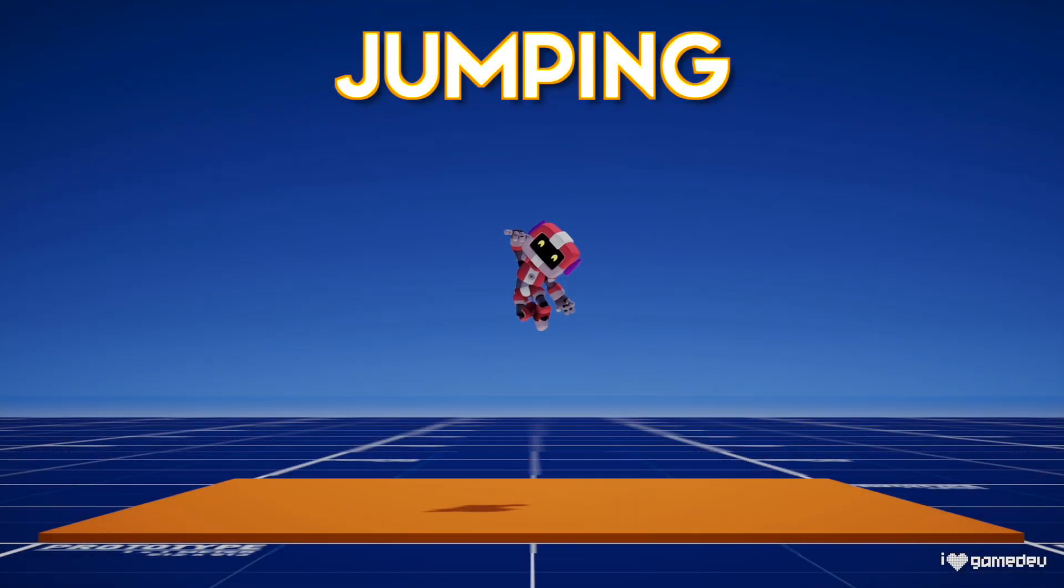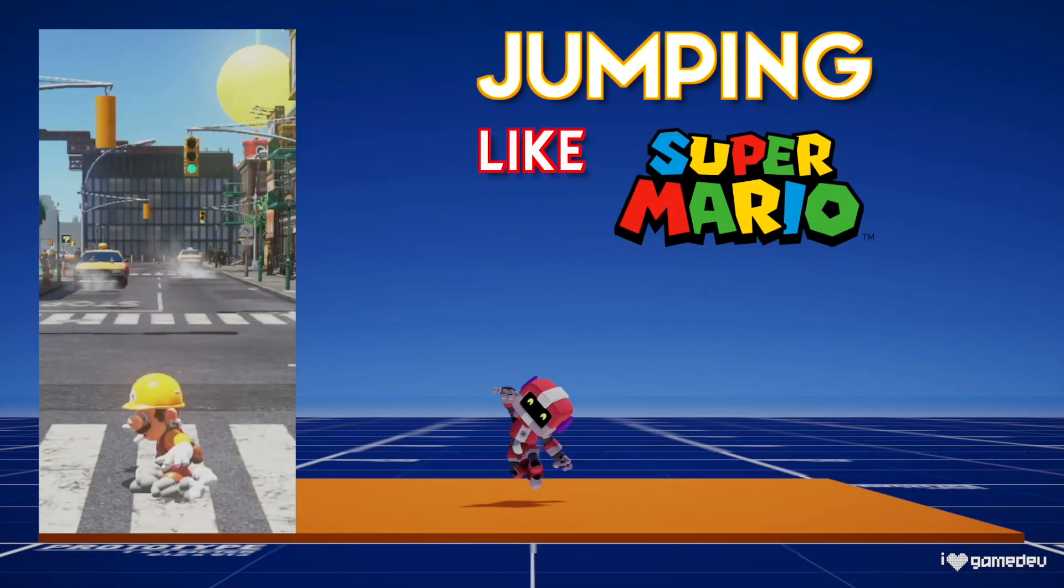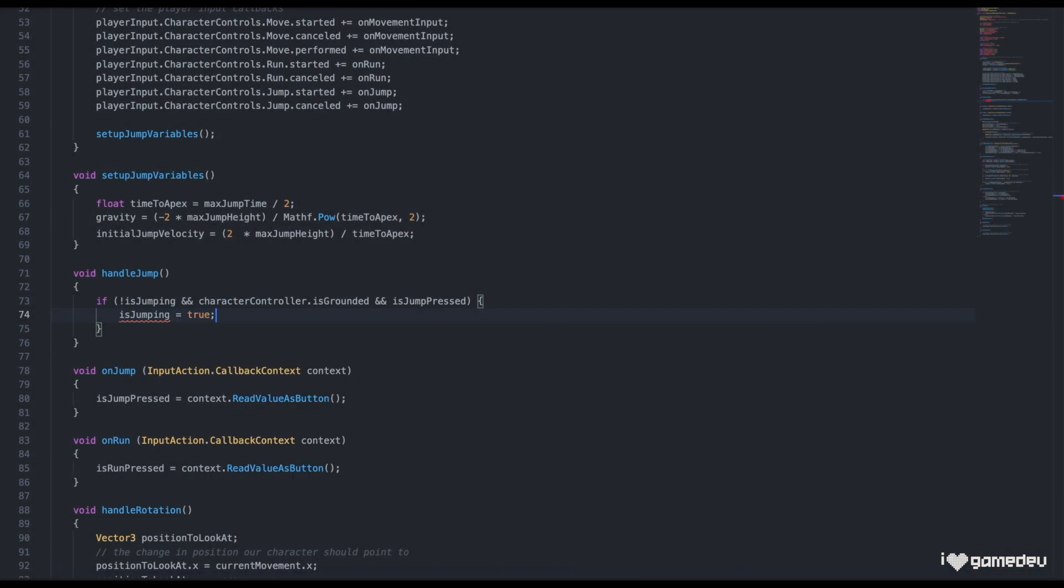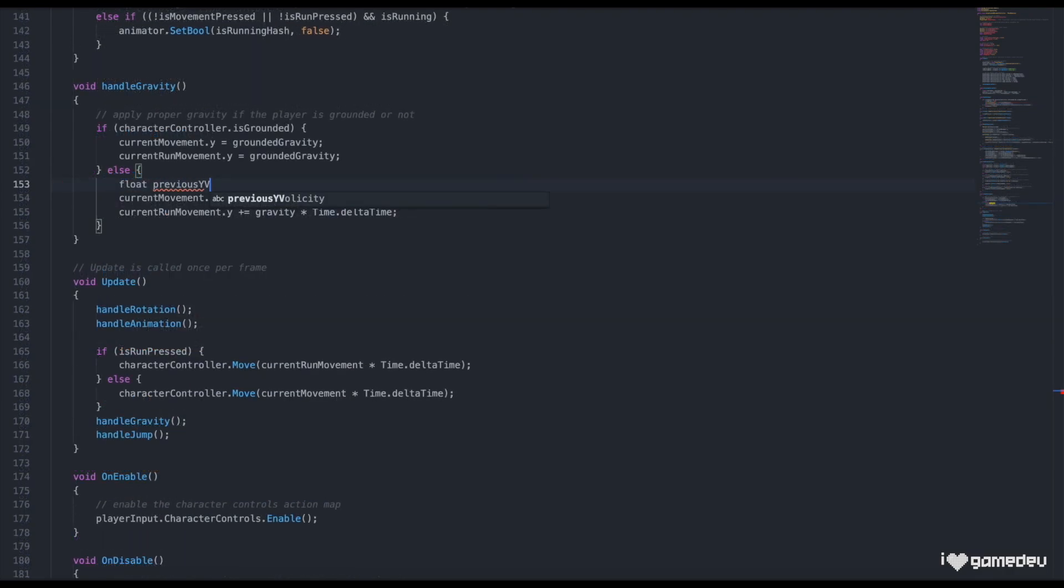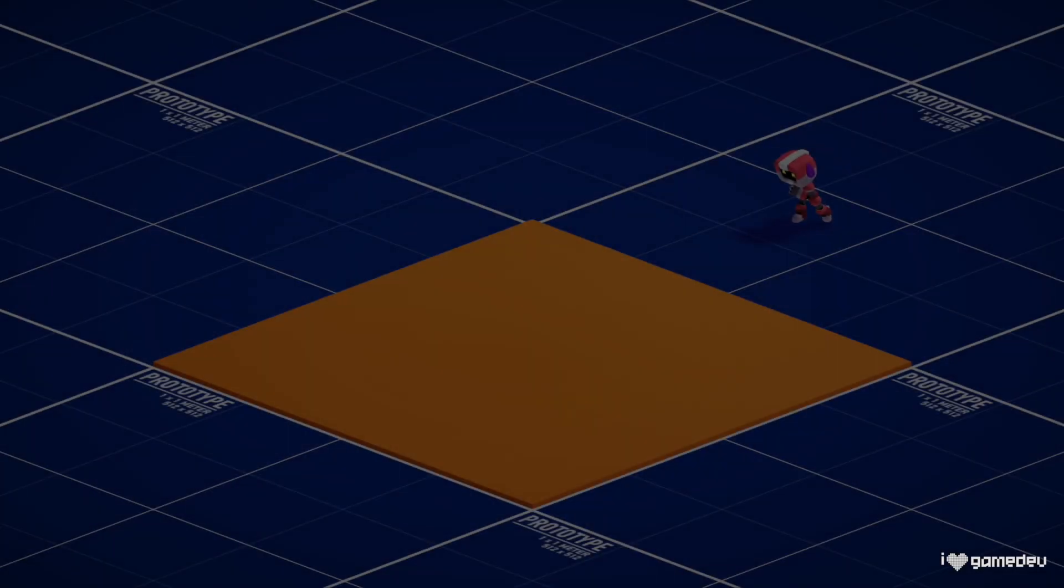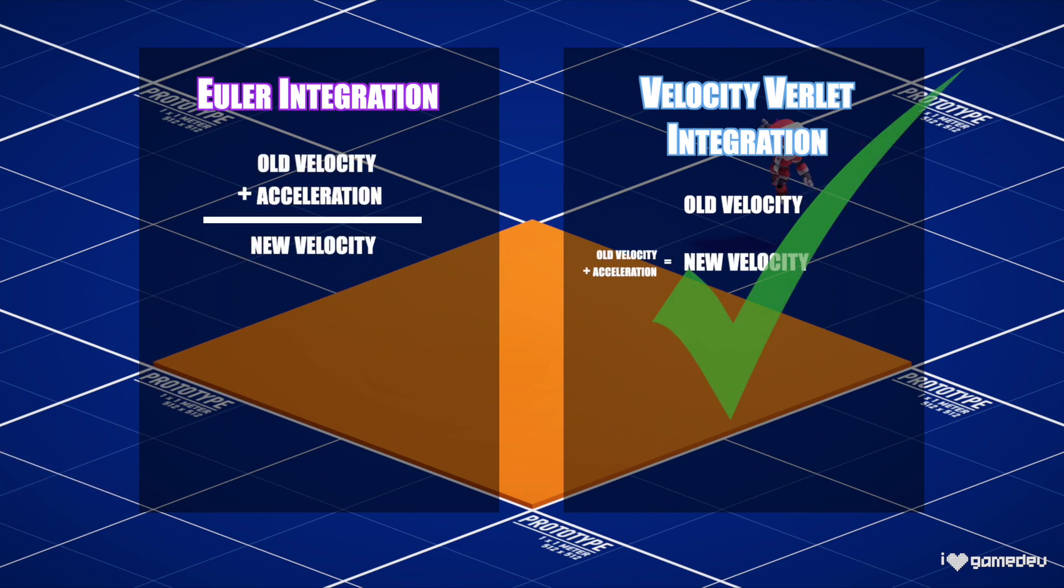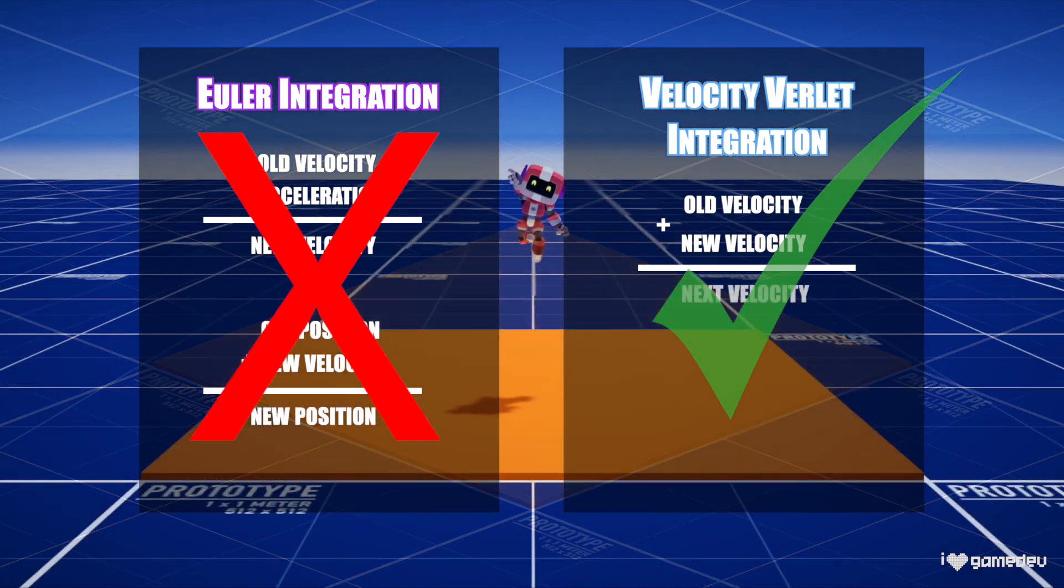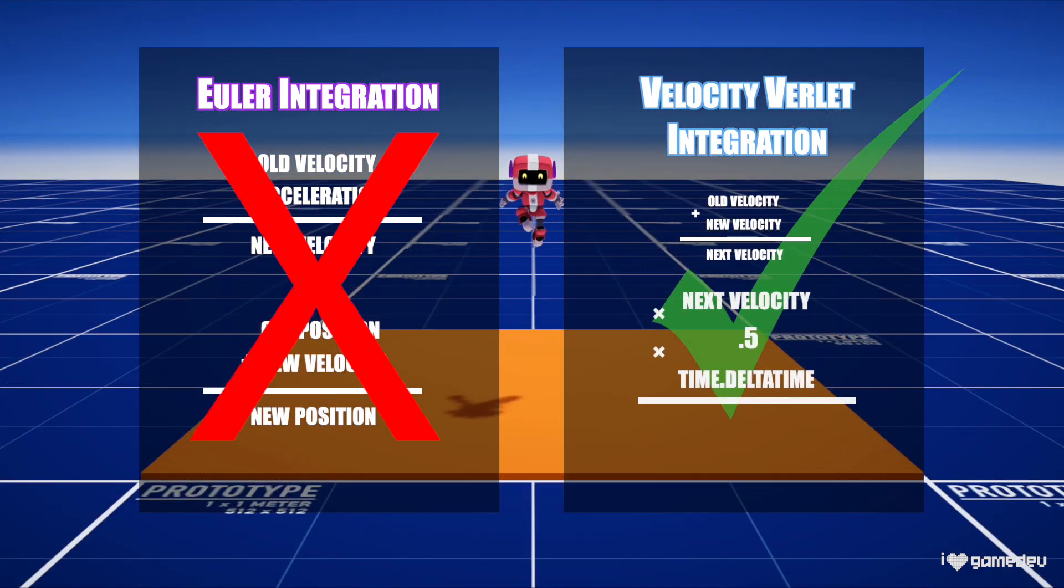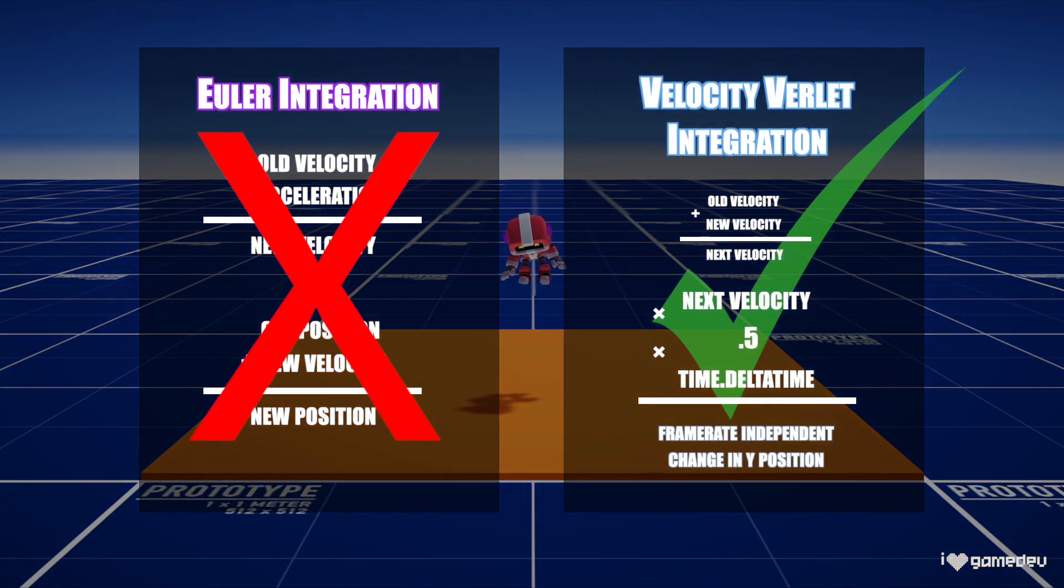In the previous video of this series, How to Jump in Unity 3D, Jumping Like Mario, we updated our animation and movement controller script to include jumping. We made the decision to use Velocity Verlet integration instead of the simpler alternative, Euler integration. More specifically, we made this decision for movement on the y-axis, which is our jump and our gravity.